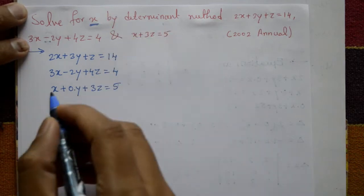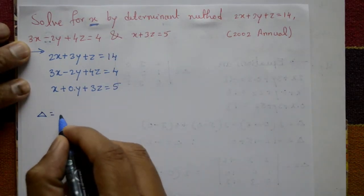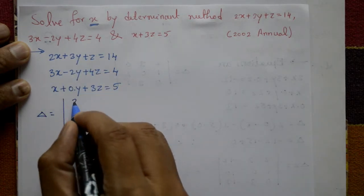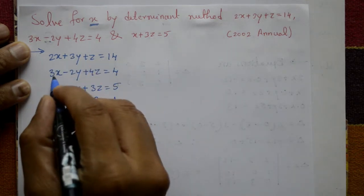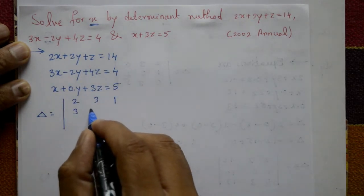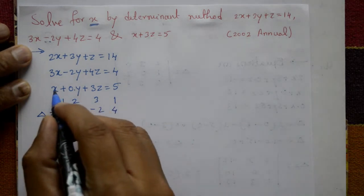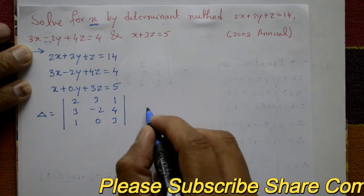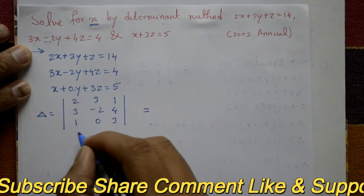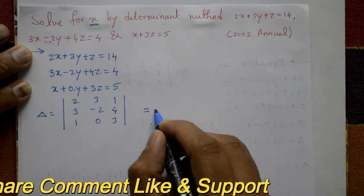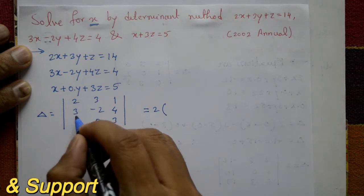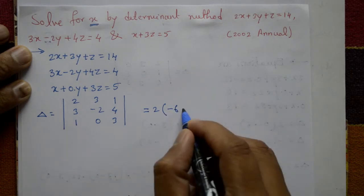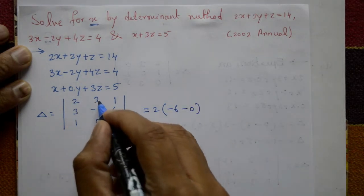First, write delta. Delta is equal to the determinant of the coefficients of x, y, z from all three equations. First equation: 2, 3, 1. Second equation: 3, minus 2, 4. Third equation: 1, 0, 3. Now expand this determinant — expand along the first row.